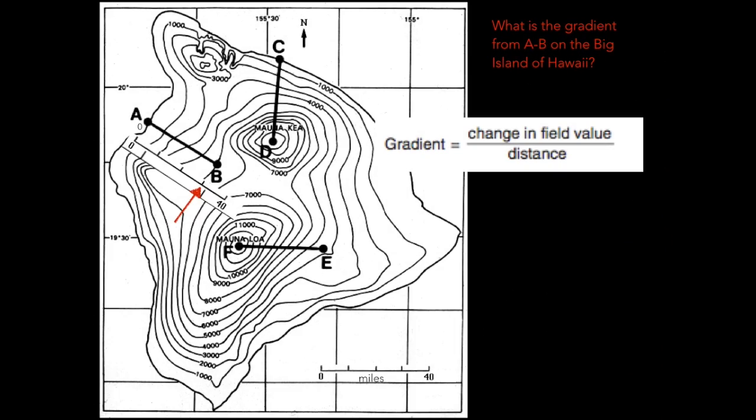So now our gradient is going to be 5,000 feet is our change in elevation or our change in field value divided by 30 miles, which we just used the map scale for.